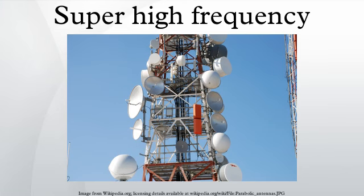Super-high frequency is the ITU designation for radio frequencies in the range between 3 GHz and 30 GHz. This band of frequencies is also known as the cm band or cm wave, as the wavelengths range from 1 to 10 cm. These frequencies fall within the microwave band, so radio waves with these frequencies are called microwaves.